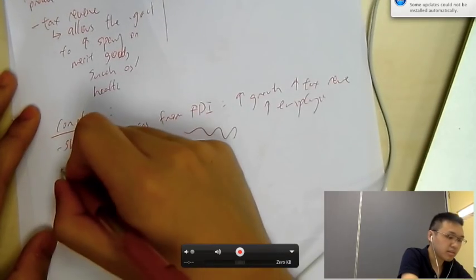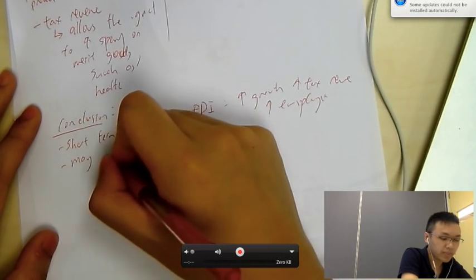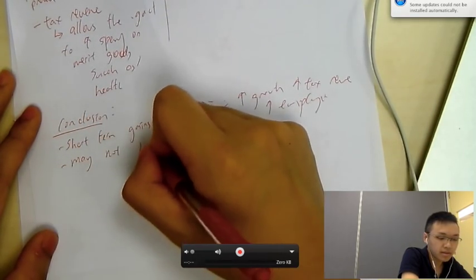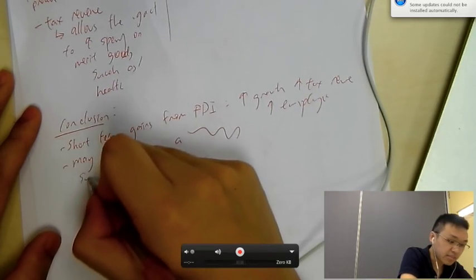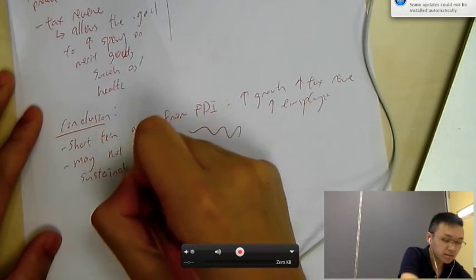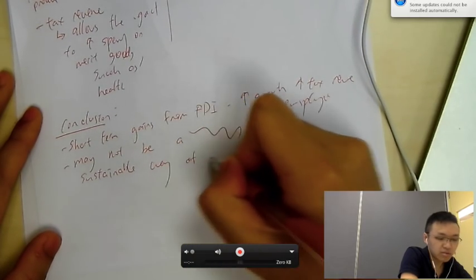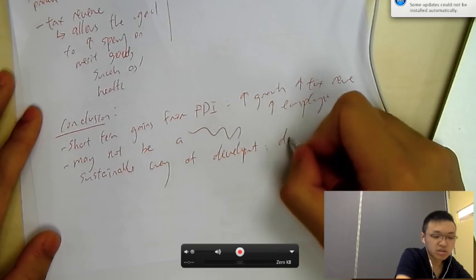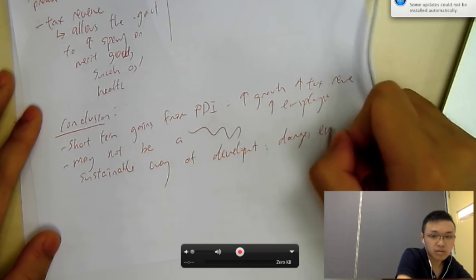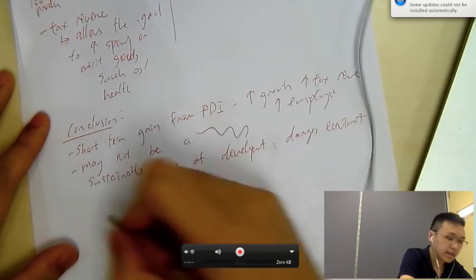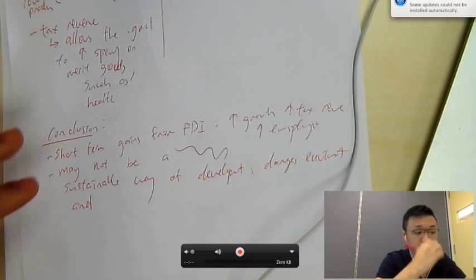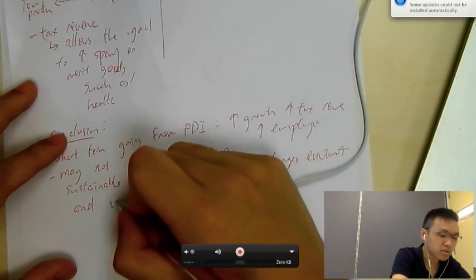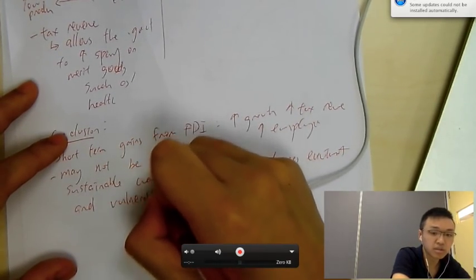However, you can say it may not be a sustainable way of development. So, why? Why is it not sustainable? Well, a few things. Because it damages the environment. And, also, another thing is that it's vulnerable to external shocks. So, it may not be continuous.